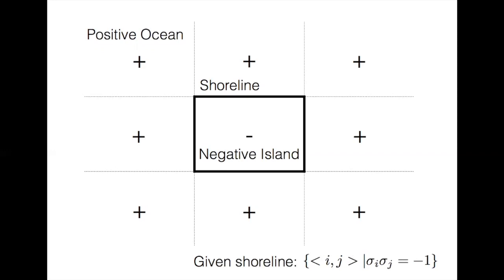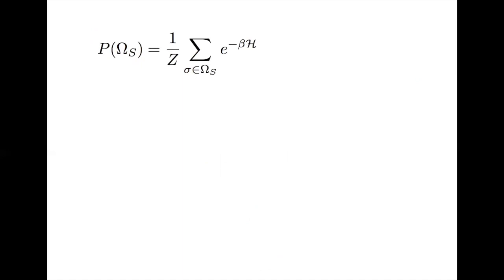So we have a shoreline s around sigma naught with a length of n of s. Our set of configurations with s as a shoreline we call omega s, which is contained in omega naught. The probability for omega s is 1 over z times the sum over all configurations in omega s of e to the negative beta h.